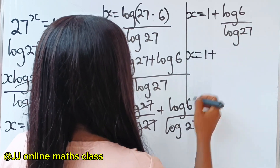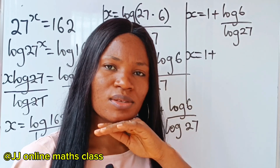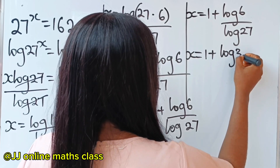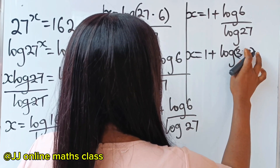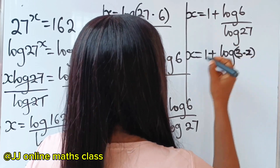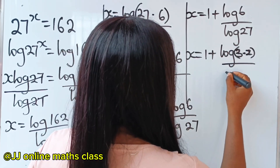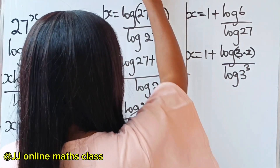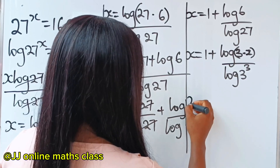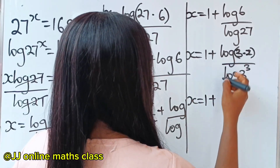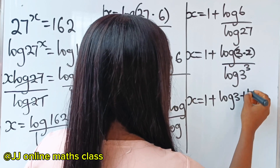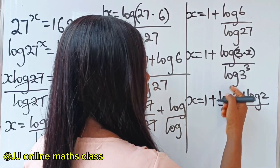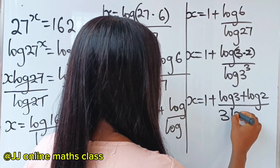Now x is equal to 1 plus log 6 divided by log 27. We can further express log 6 as log(3 × 2), and log 27 as log of 3 to the power of 3. Using the power rule, log(3³) becomes 3 log 3. So we now have x equal to 1 plus log(3 × 2) divided by 3 log 3, which we split using the product rule to get log 3 plus log 2, divided by 3 log 3.